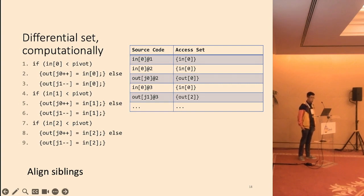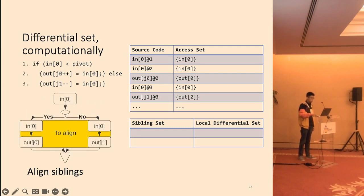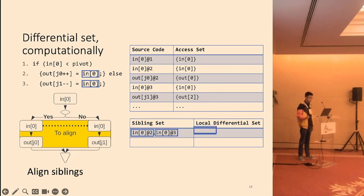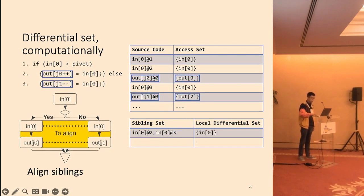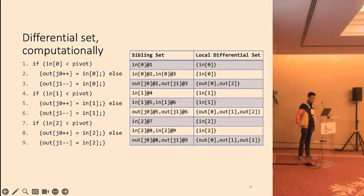Next, we arrive at the most interesting step. We are going to align memory accesses across branches. We call the line of memory access siblings, as they occur in relatively same place in their respective branches. We will then merge their respective access set into what we call local differential set. Let's see how that works with the running example, where we focus on the first iteration of the loop. We also have a control flow graph of this code snippet. The obvious way to align memory accesses is to group the first two in[0] into the sibling sets and merge their access sets into local differential set. Next, we align out[j0] and out[j1] and merge their access set. We align the rest of the program, and we arrive at this mapping from sibling sets to local differential set. Again, we cheated a little by using a simple example. We will discuss how to align more complicated programs later.